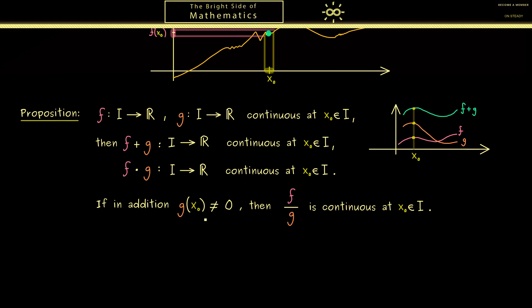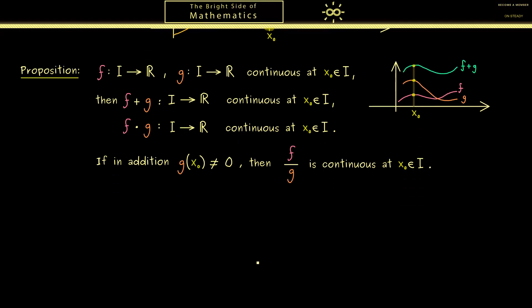Now the next combination we should analyze is the composition of two functions. Composition means we first apply one function and then the other. Usually the picture looks like this: first comes g and then comes f. And the new map that comes out here we call f after g.